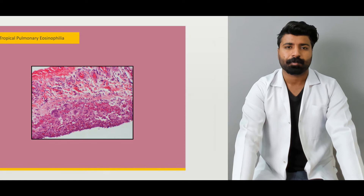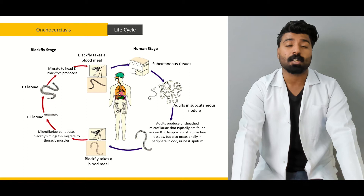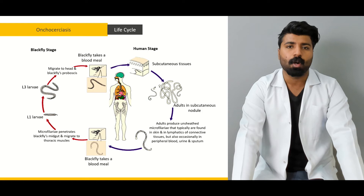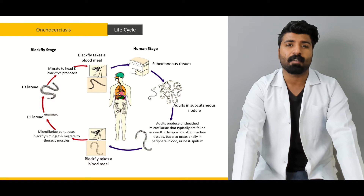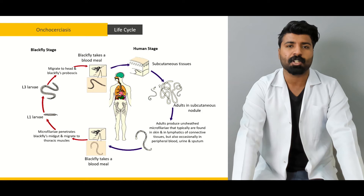Next, we'll talk about Onchocerciasis — what causes it, its life cycle, what two hosts it uses, how those black flies bite us and introduce their larvae into our body, how those larvae develop into the adult form and then return to the black flies, and in the process how they affect our body. We'll also cover how we diagnose this pathology and how we treat this patient.